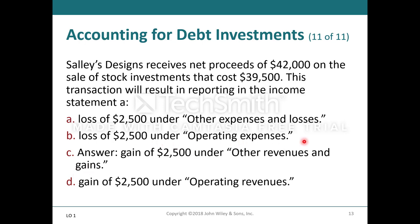The $2,500 is not an other expense or a loss — it has nothing to do with operations. This is an investment activity, which is totally separate from whatever the original business purpose is, so it will never be an operating expense or operating revenue. It ends up being other revenue and gains.